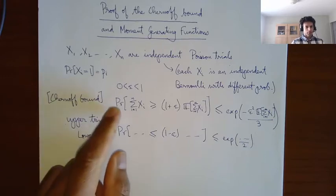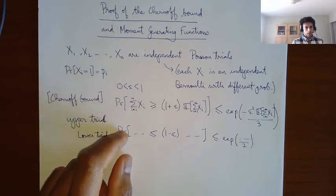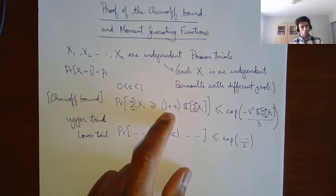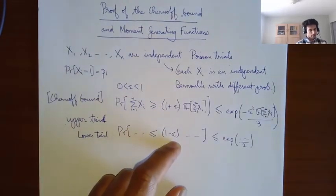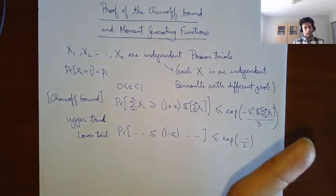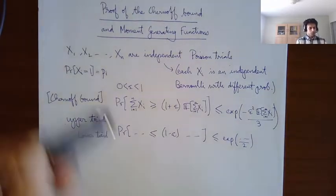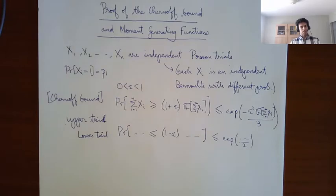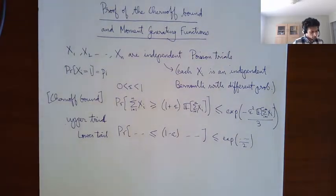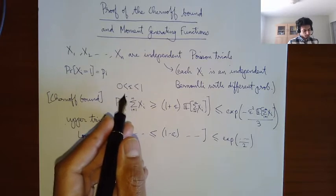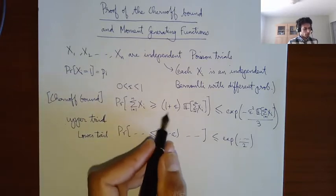The Chernoff bound gives you an upper tail bound and a lower tail bound, where epsilon is between 0 and 1. So you have a deviation of being more than epsilon times the expectation or less than epsilon times the expectation. From the last lecture, we were also discussing concentration bounds for the sums of squares of Gaussians. The basic technique of the Chernoff bound proof essentially works to prove that — and that is actually more direct than this Chernoff bound. Note that epsilon being between 0 and 1 is an obvious constraint here, but not so much over there.